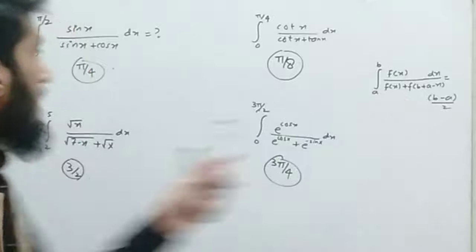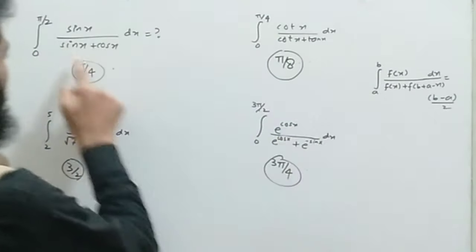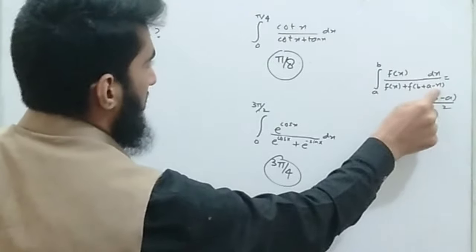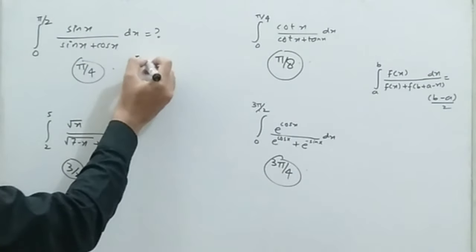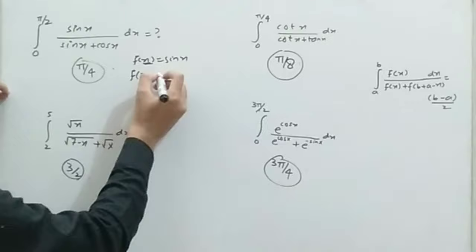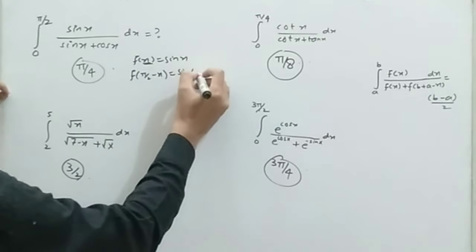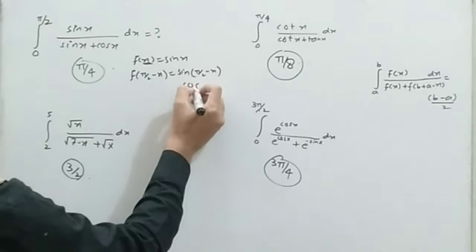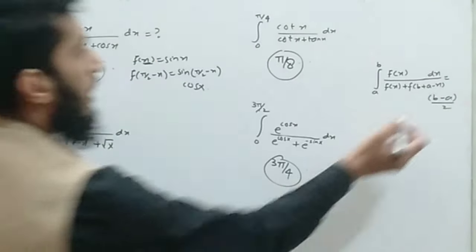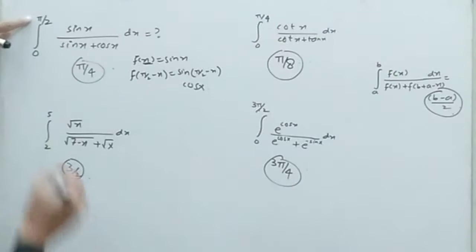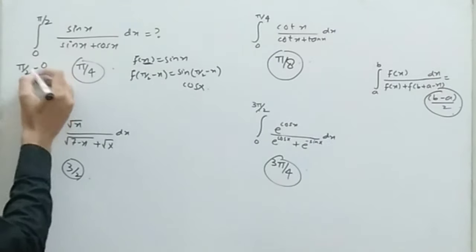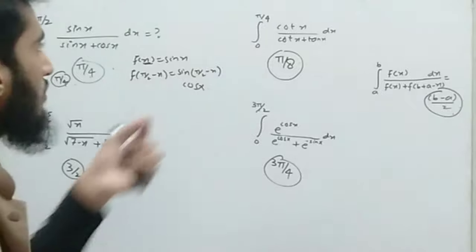Remember: when a function f(x) is given in the numerator and the same function is given in the denominator — which is sin(x) — we have upper limit b and lower limit a. We add this limit and subtract x. So f(x) = sin(x), and after adding the limits it becomes π/2 minus x, which gives us cos(x). The required answer is b minus a divided by 2: upper limit π/2 minus lower limit 0, divided by 2, gives us π/4.